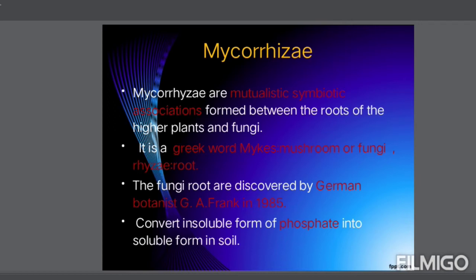Mutualistic symbiotic association means they mutually help each other — between the roots of the higher plant and the fungi. The word mycorrhiza comes from 'mykes' meaning mushrooms or fungi, and 'rhiza' meaning root. The fungi-root association was discovered by German botanist G.A. Frank in 1885. The main role of mycorrhiza is to convert the insoluble form of phosphate present in the soil into soluble form so that plants can easily uptake it.